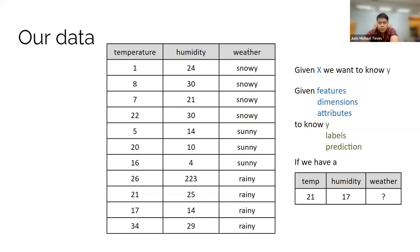So for example, you have a temperature of 21, the humidity is 17. What do you think is the weather? There is no exact match here from what I can see. So how do we now know? Right? There's no exact match.